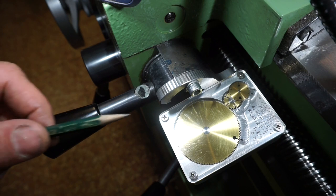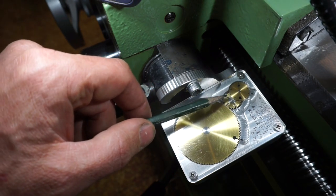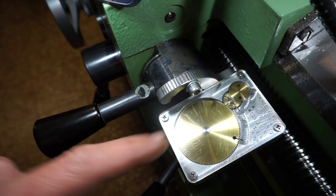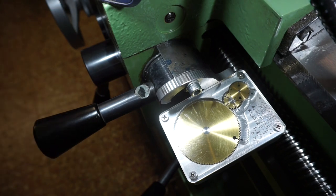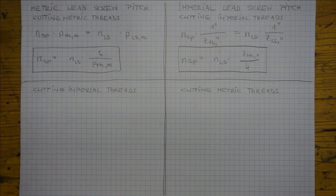Okay, so far we covered the issue of metric threads with the aid of these upper two dials here. But you maybe think what's going on with the large one? This one is to index imperial threads. Yes, this is possible even though we have a lathe with a metric lead screw here.